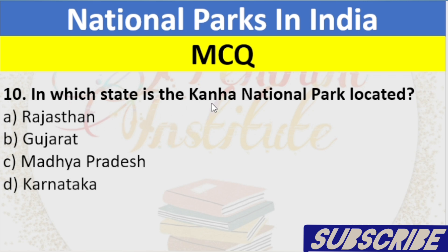Question 10: In which state is the Kanha National Park located? A. Rajasthan, B. Gujarat, C. Madhya Pradesh, D. Karnataka. Answer: C. Madhya Pradesh.